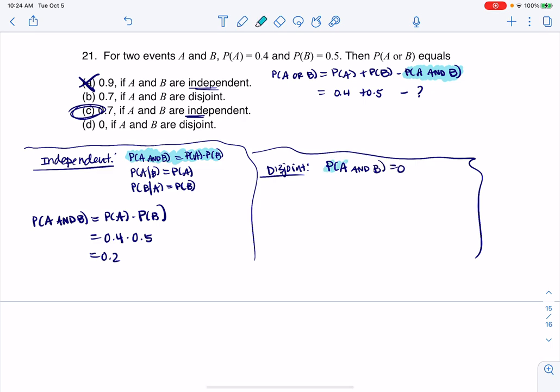Well, I can sub that in, right? We just found it. Probability of A and B is zero. So this would now turn into 0.4 plus 0.5 minus zero, which is 0.9. So if they're disjoint, this probability is 0.9, right? Not 0.7.